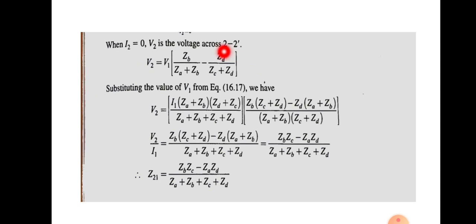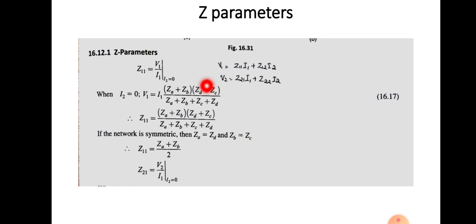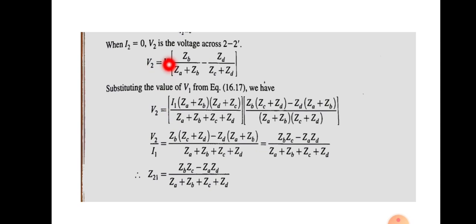So V2 = V1 · [ZB / (ZA + ZB) − ZD / (ZC + ZD)]. Substituting the previously found expression for V1 and simplifying by cross-multiplying and cancelling common terms, we can take I1 as a factor. The final result is Z21 = V2 / I1 = (ZB·ZC − ZA·ZD) / (ZA + ZB + ZC + ZD).